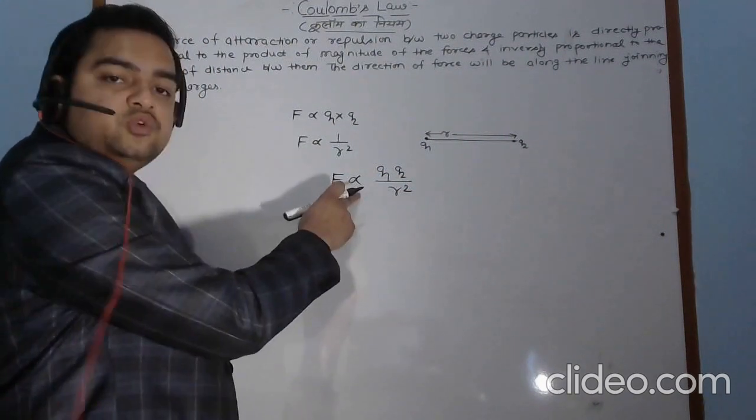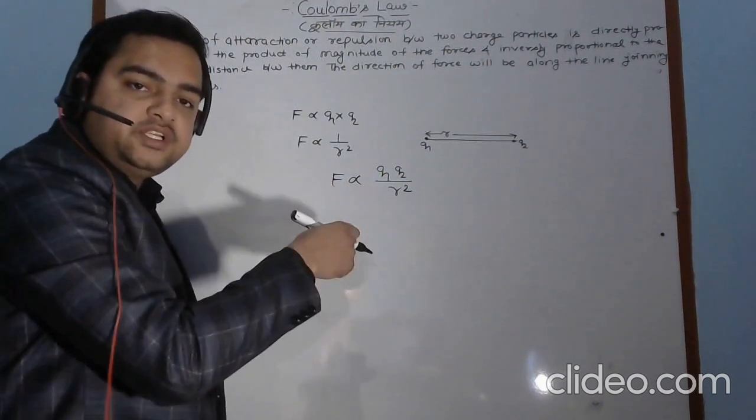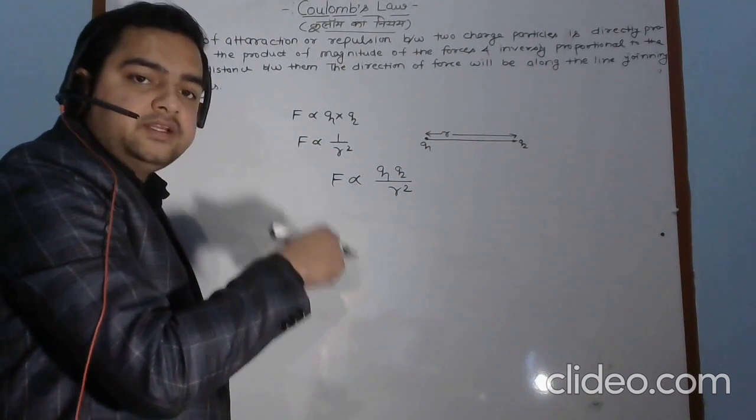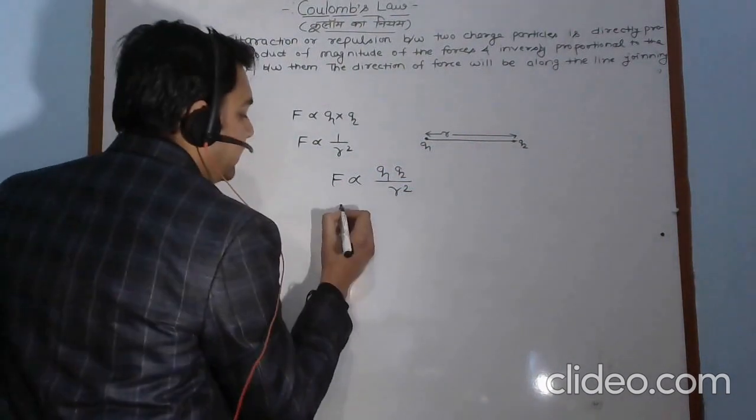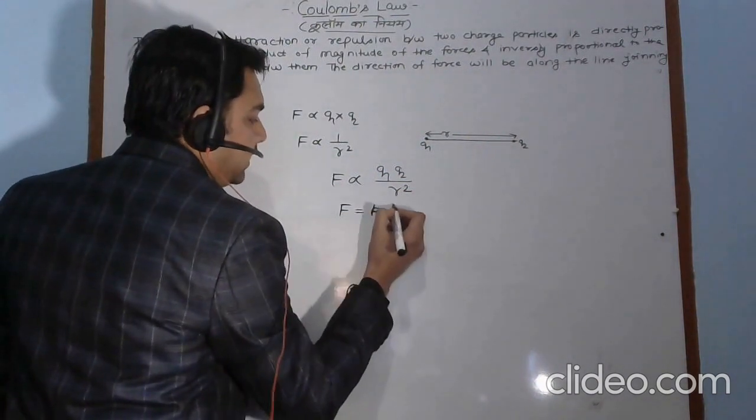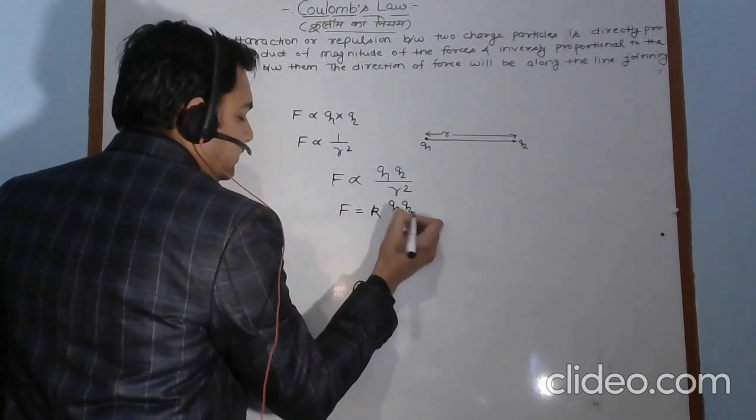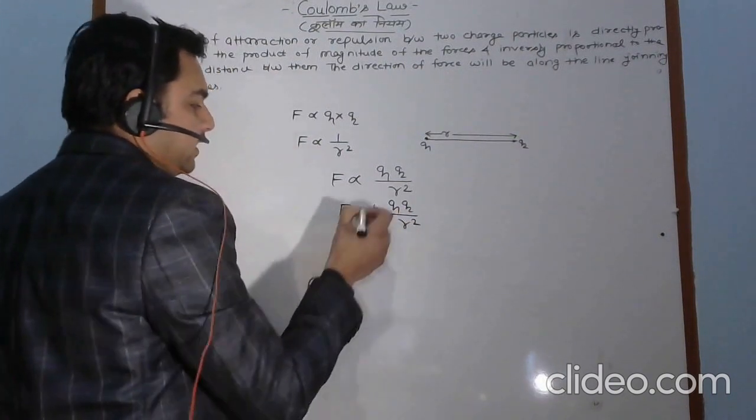To remove this proportionality sign, we have to introduce a constant, a proportionality constant. Here the proportionality constant is F equals small k q1 q2 upon r square.